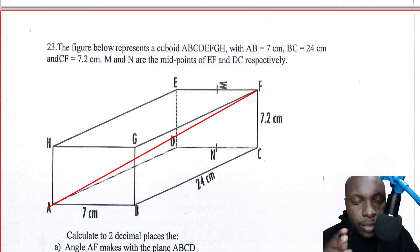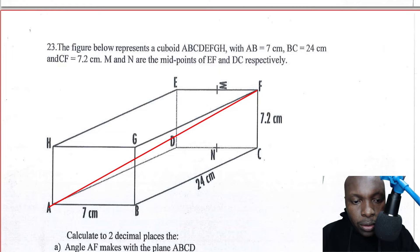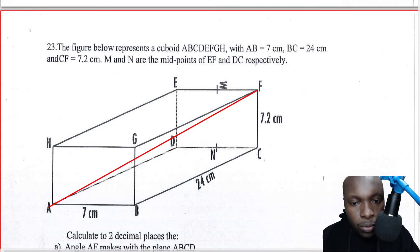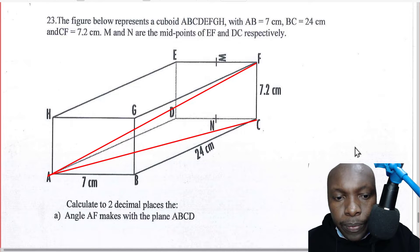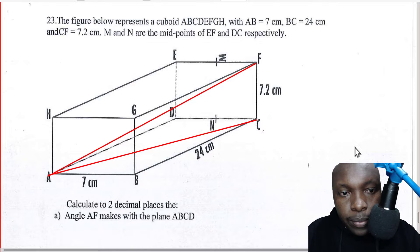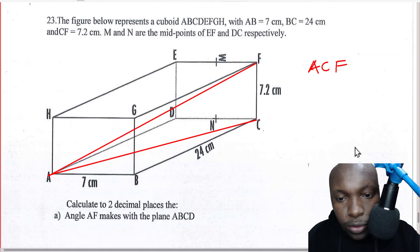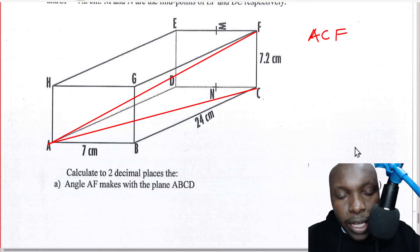The angle between a line and a plane is obtained by finding the angle between that line and its projection on that given plane. So what we need to do is get the projection of line AF on the plane ABCD. The projection is the shadow — what is the shadow of line AF on the bottom plane?